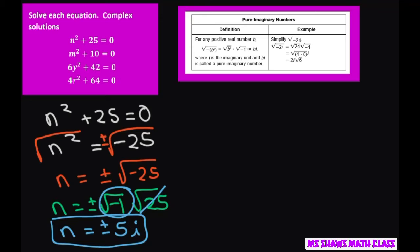The second one is very similar. So we have m squared plus 10 equals 0. You have m squared equals negative 10. Don't forget when you take the square root of both sides, you have to put plus and minus because it could be plus and minus.